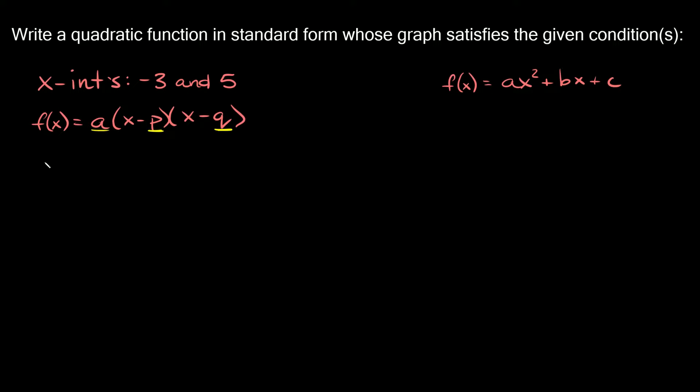Alright, so then we're going to have f of x is equal to, and for a you can plug in any number and I recommend using 1 because whenever you multiply by 1 it doesn't change anything right. So that's why we're going to plug in a 1 for a, and then in parentheses we're going to have x and then we're going to plug in our x-intercepts. So we have a minus 3 and a positive 5.